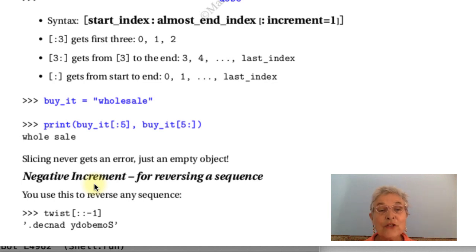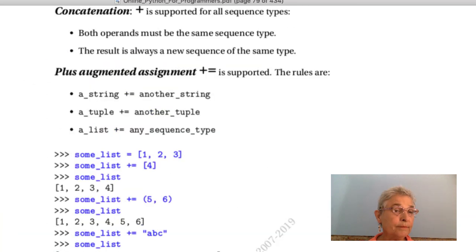Here is a useful negative increment. It'll reverse the sequence. So here I have twist, that's somebody danced. And I'm going from the beginning to the end by minus one. But if I'm going in the negative direction, that means I'm going from the end to the beginning, one at a time. So that's somebody danced backwards. Sometimes that's useful. Even though it's kind of strange syntax, it's a little bit famous.